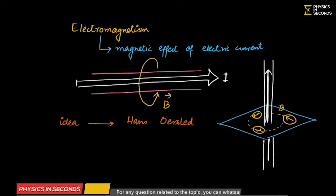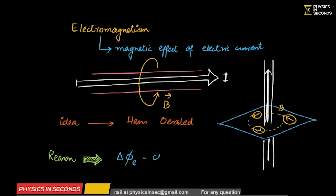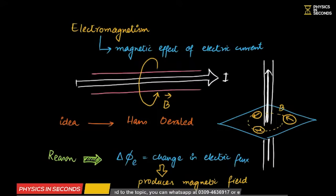The reason for this is that the basic and fundamental forces of nature are intrinsic properties — for example, the electric field of a charge is its intrinsic property, the gravitational field of Earth is its intrinsic property. Similarly, a magnetic material producing a magnetic field is its intrinsic property. The reason is change in electric flux — whenever there is a change in electric flux in a conductor, it produces a magnetic field around it. This is what Maxwell later explained when discussing electromagnetic waves.